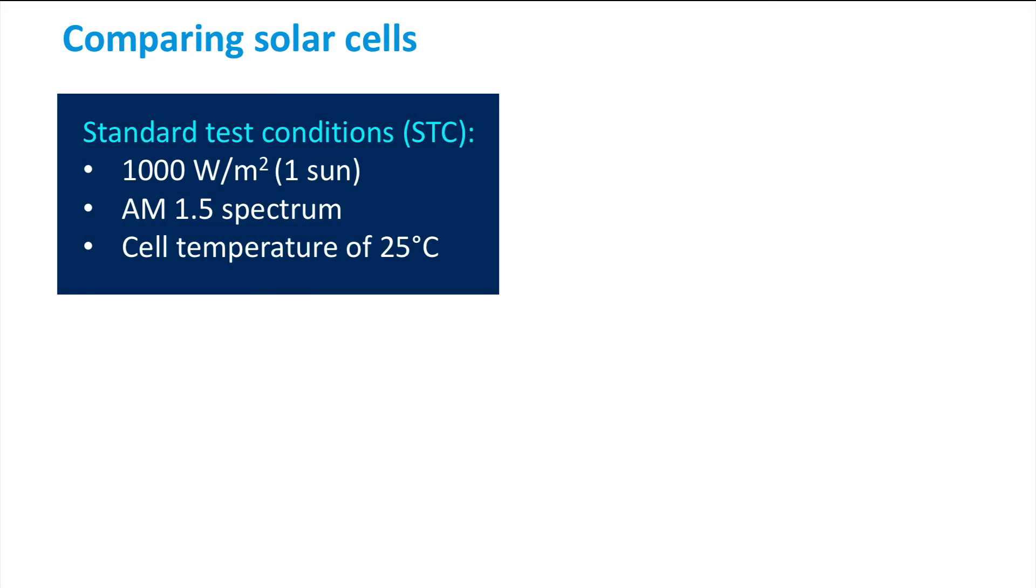To measure a solar cell under a controlled AM1.5 spectrum, solar simulators are used, like the one shown in this picture. A solar simulator uses a special lamp or a set of lamps to mimic the AM1.5 spectrum as closely as possible.